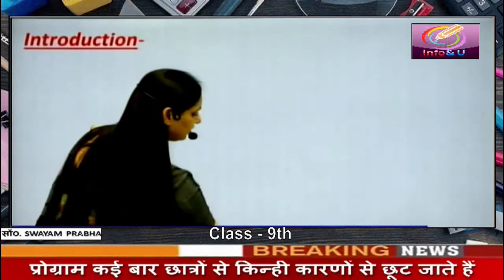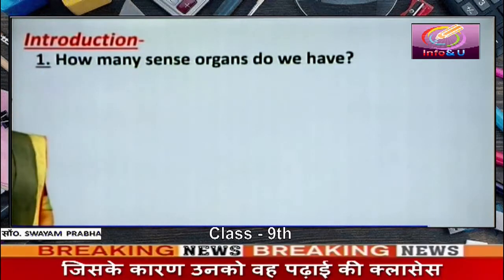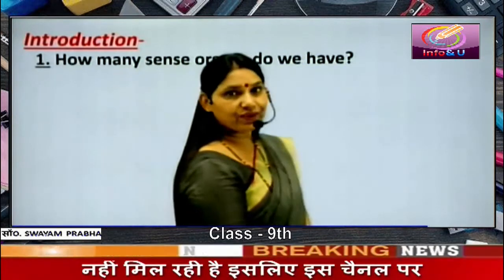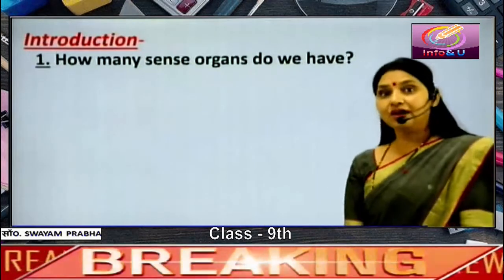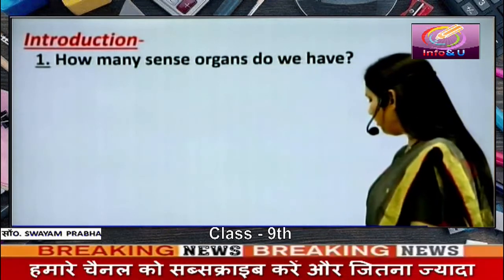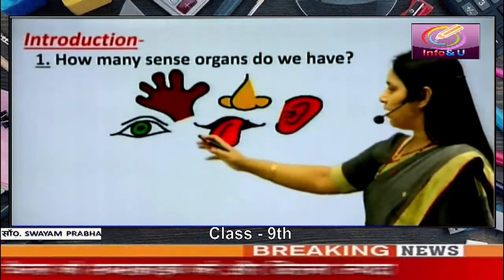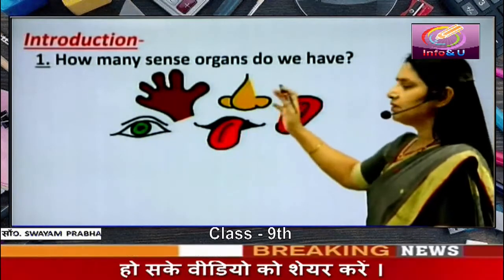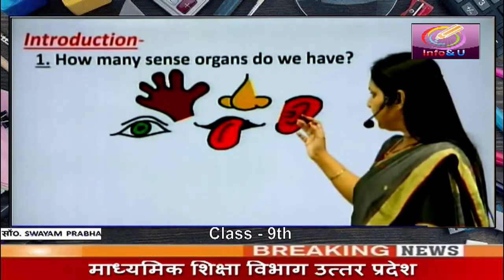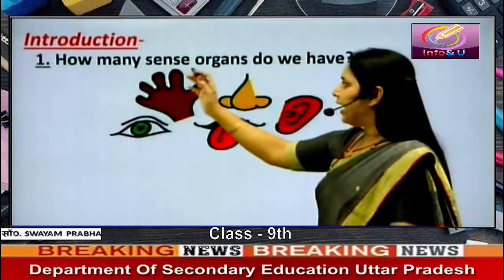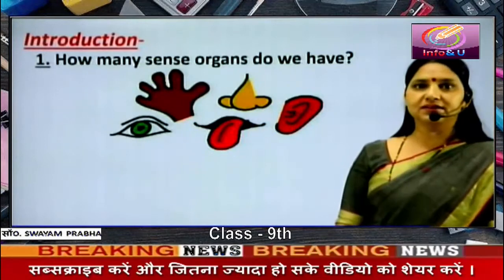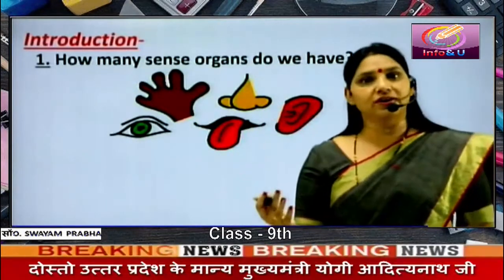Introduction. My question to you is: how many sense organs do we have? You know that we have sense organs to feel what is going on around. And how many sense organs do we have? Five. These are eyes, tongue, ears, nose and skin. We see, taste, hear, smell and touch with these sense organs. And that is how we gather information about what is going on around.